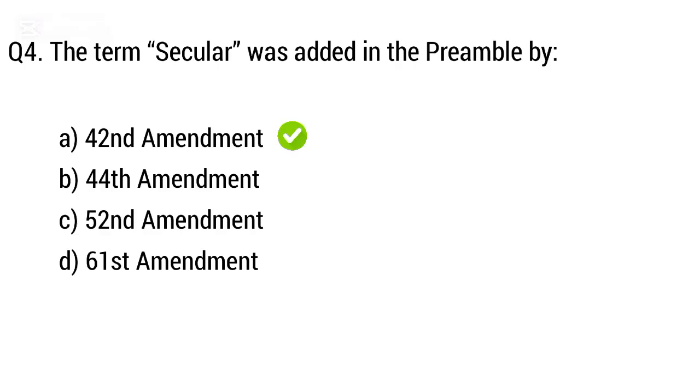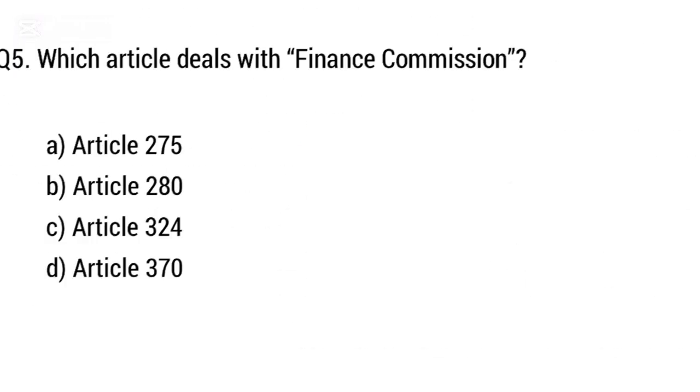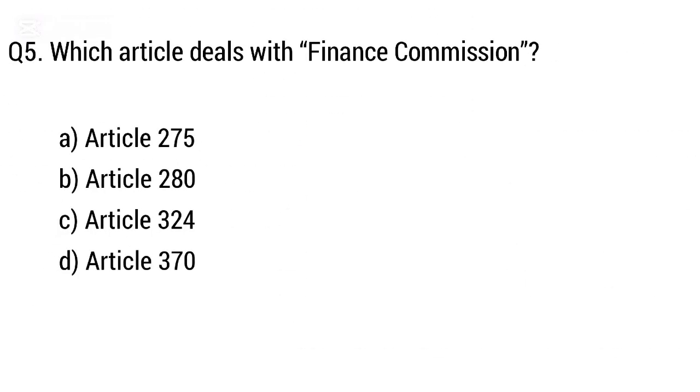Question 4: The term 'secular' was added in the Preamble by? The right answer is option A: 42nd Amendment. Question 5: Which article deals with the Finance Commission?